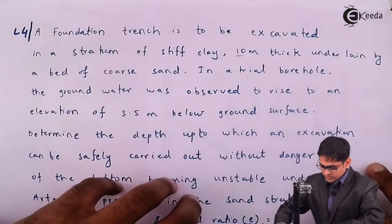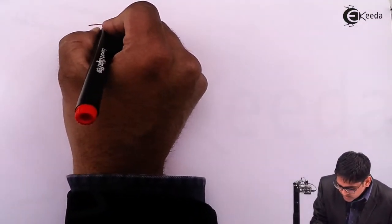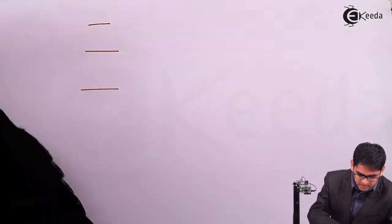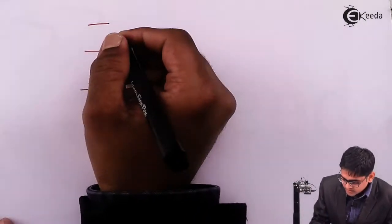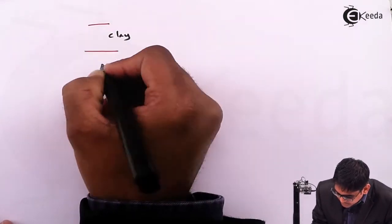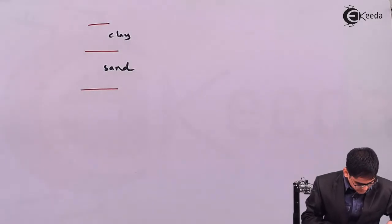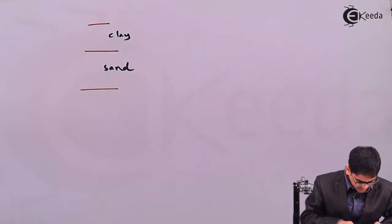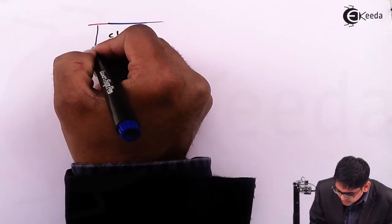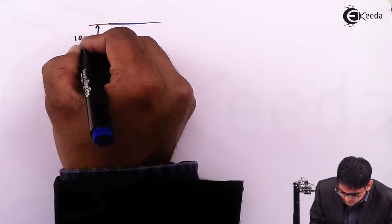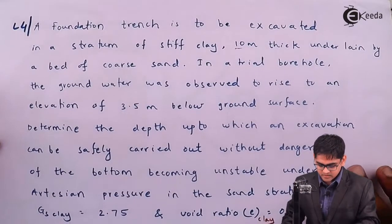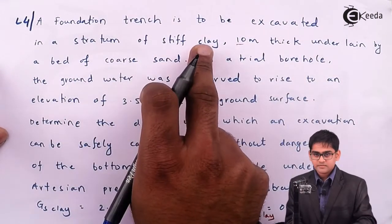I will draw a diagram for illustration. We have clay on top and then sand below, which is under artesian pressure. The thickness of the clay layer is given as 10 meters and we need to excavate a trench into this stiff clay.